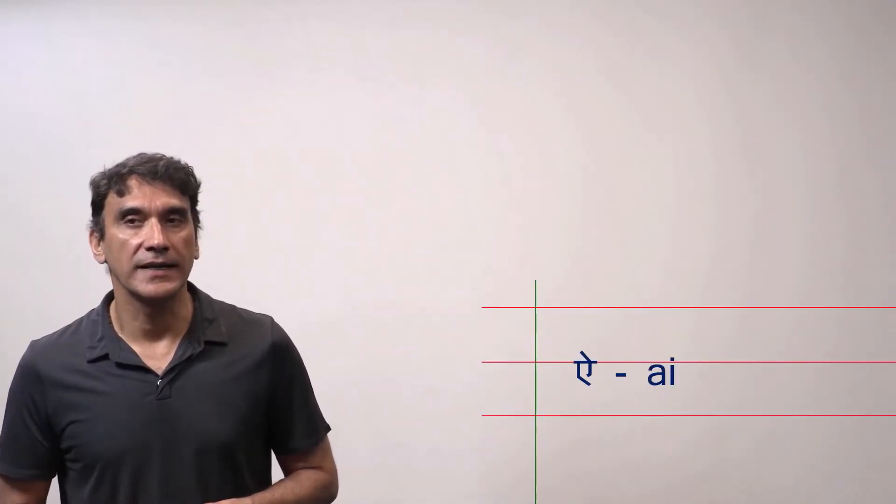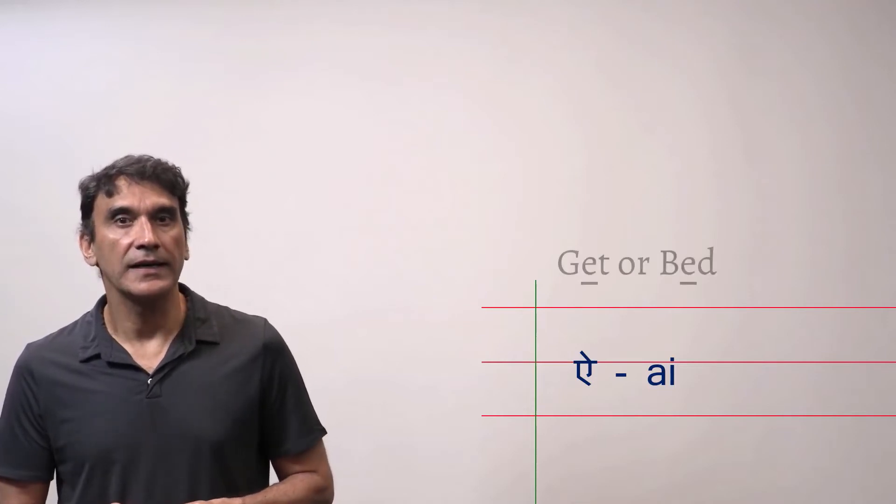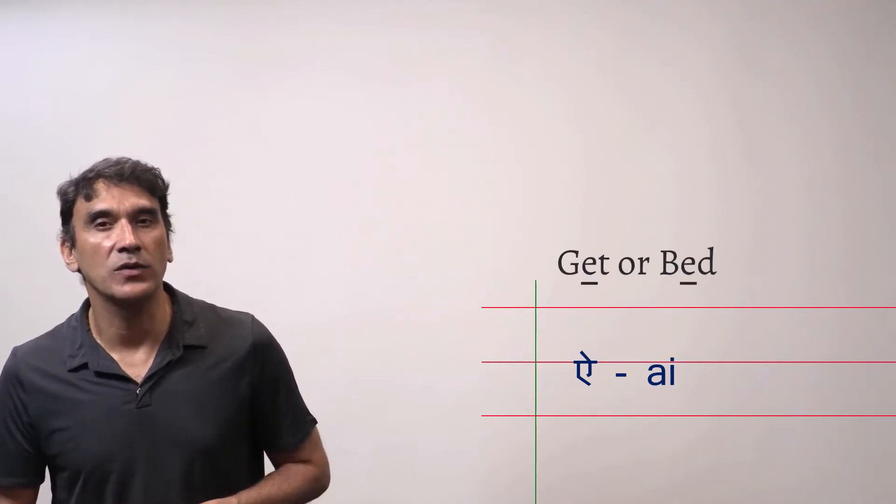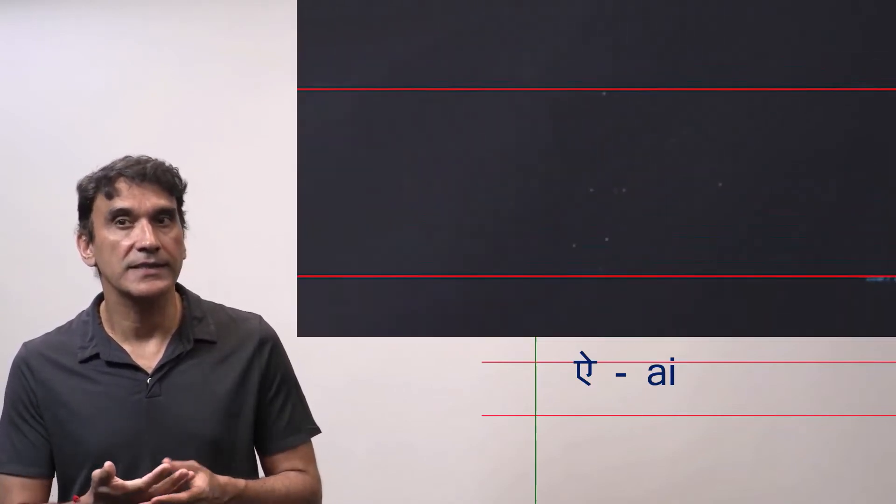The next vowel is ai. It is pronounced ai in Hindi. It is something like the e sound in the words get or bed. So it is e sound. Let's see how it is written.